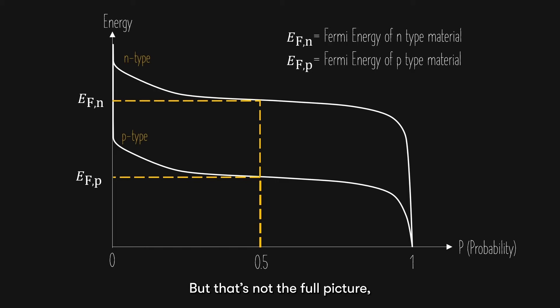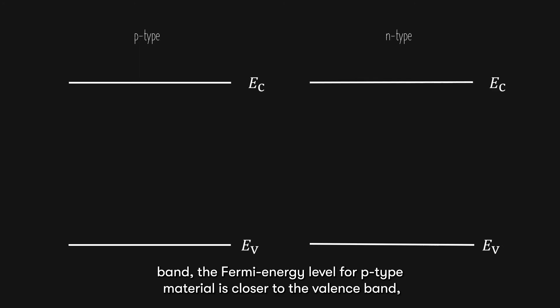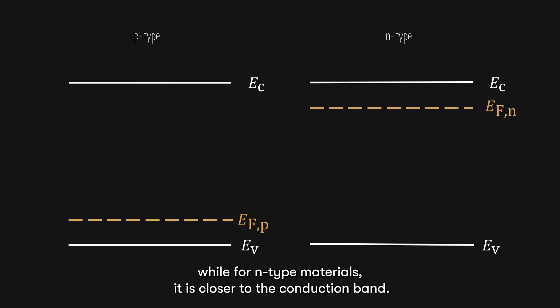But that's not the full picture. It is not exactly higher. If we plot the Fermi energy level with respect to the conduction and valence band, the Fermi energy level for p-type material is closer to the valence band, while for n-type materials, it is closer to the conduction band. This should be the correct definition.